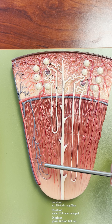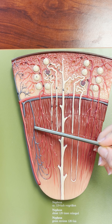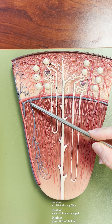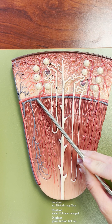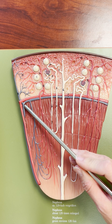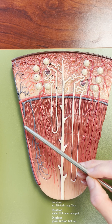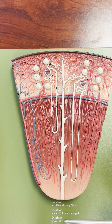From the vasa recta, blood drains into the arcuate vein, then into the interlobar vein and back to the renal vein. The renal vein drains into the inferior vena cava on its way back to the heart.